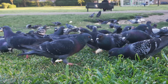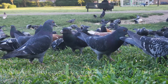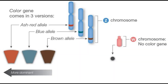The color gene comes in three different versions, or alleles: blue, brown, and ash red. Males have two color alleles, and their feather color is specified by the more dominant of the two alleles. Ash red is dominant to blue, which is dominant to brown. Females have just one color allele, and whatever allele that copy specifies their feather color.